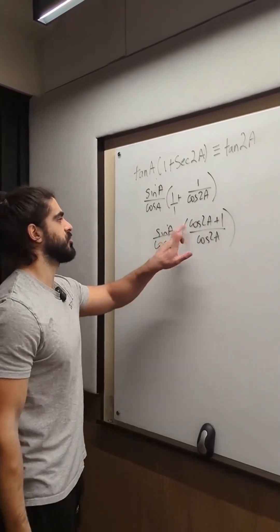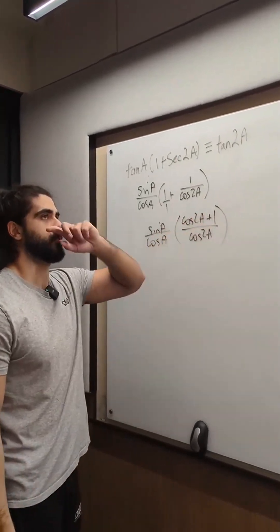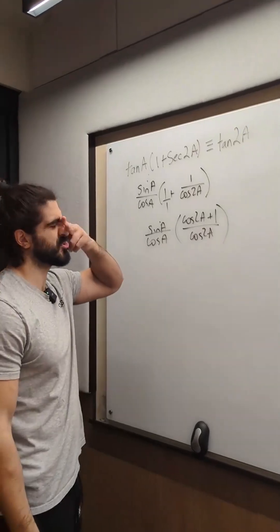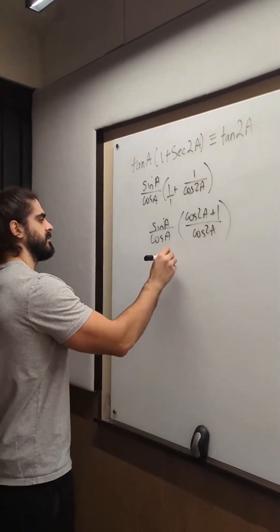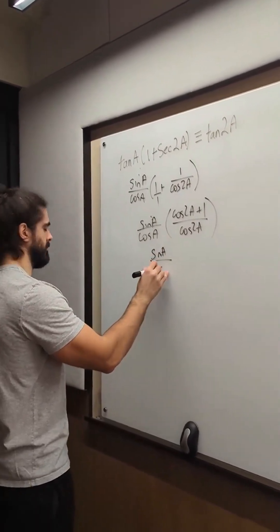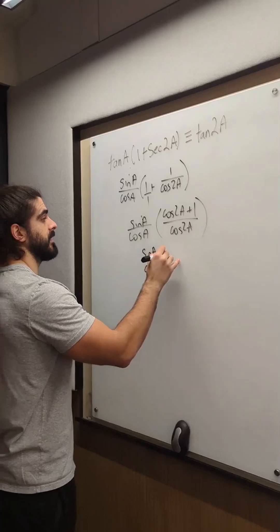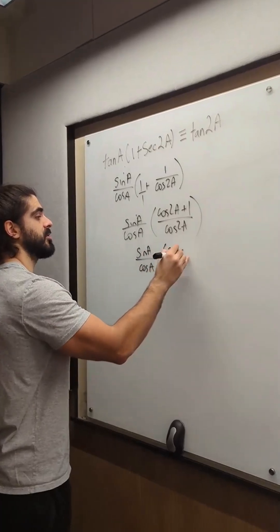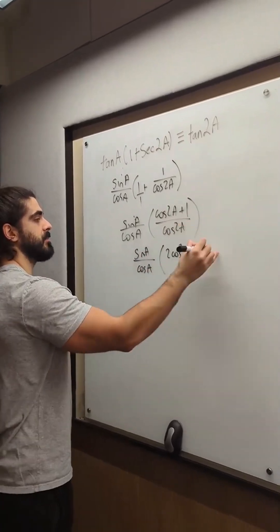Cos 2a plus 1, divided by cos 2a. Well, the one I want to use for this for sure is the one that gets rid of the plus 1. That'll be 2cos squared minus 1. 2cos squared a minus 1, then a plus 1.